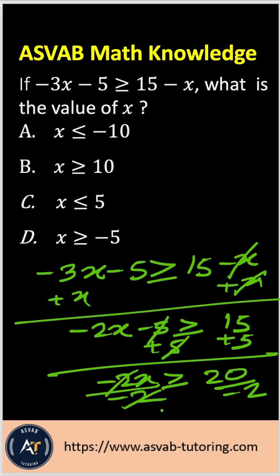Negative 2 and negative 2 cancel out. That gives you x is less than negative 10.